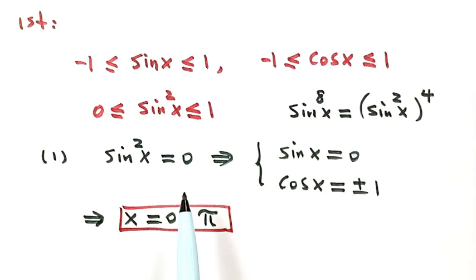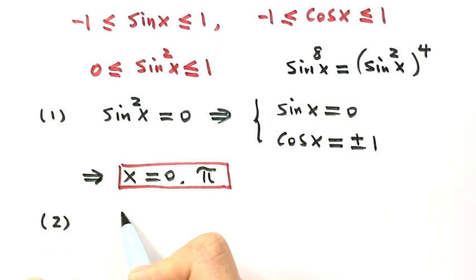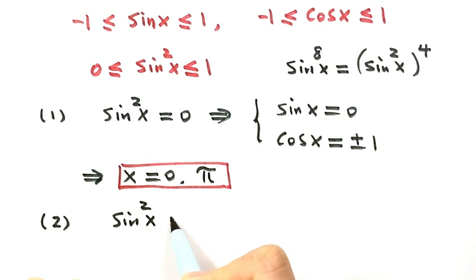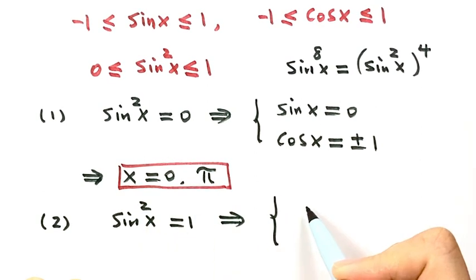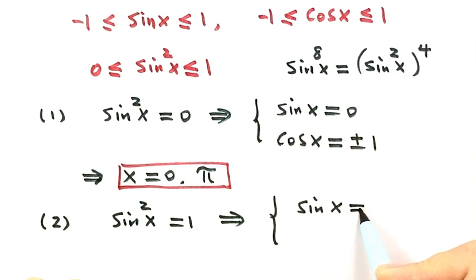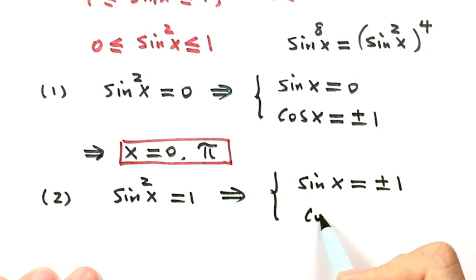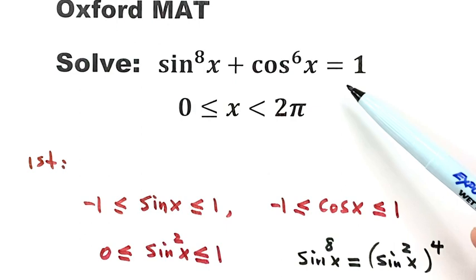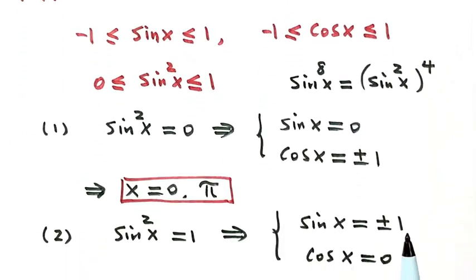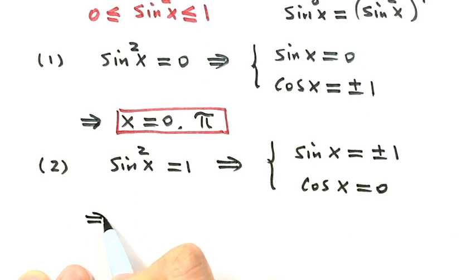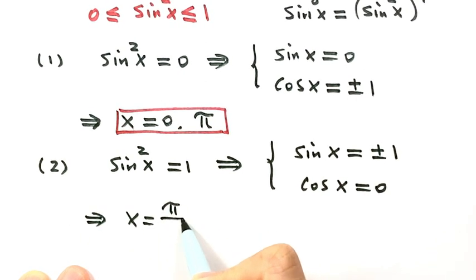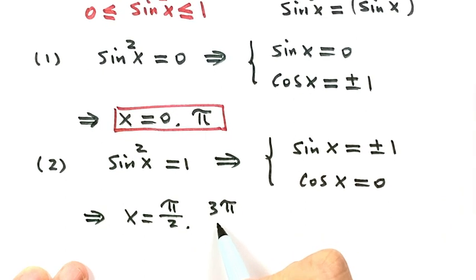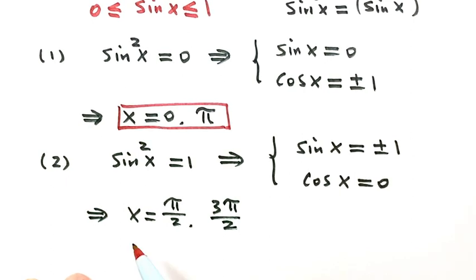Now let's see the second case: sine x squared equals 1. Then sine x equals positive or negative 1, and cosine x equals 0. Bringing these two cases into the equation makes it true. Solving these gives x equals pi over 2 and x equals 3 pi over 2. Those are another two solutions.